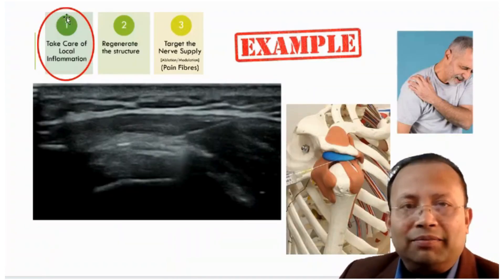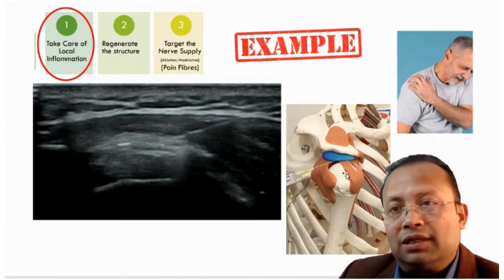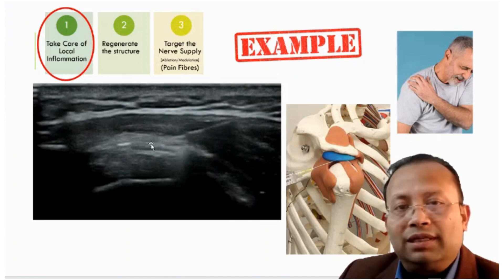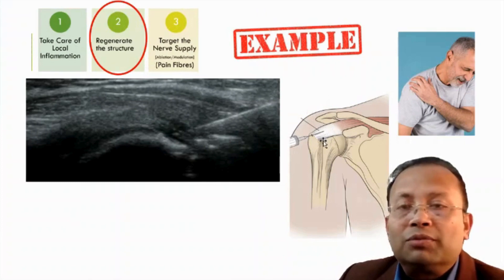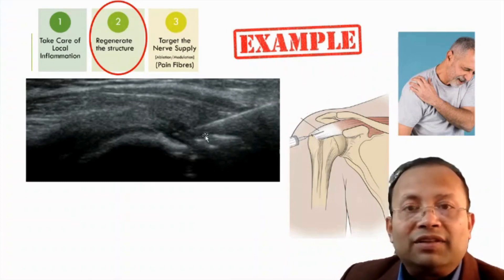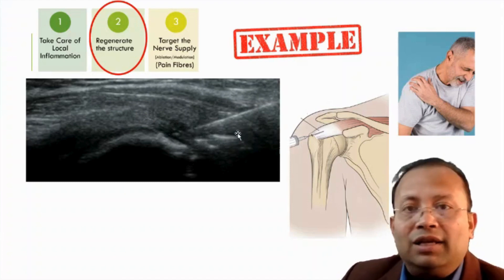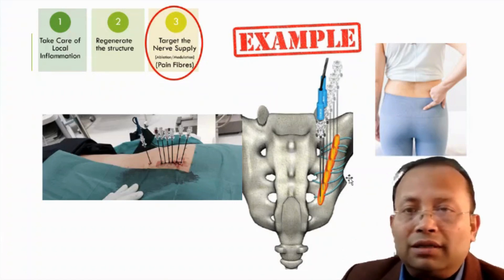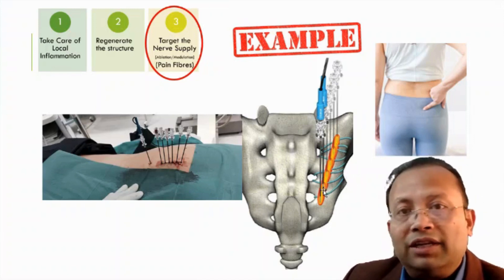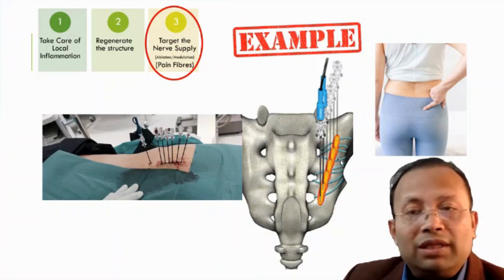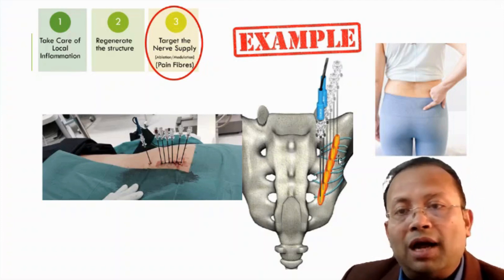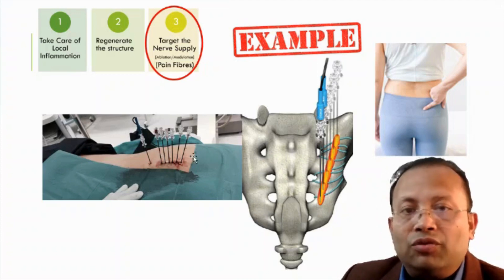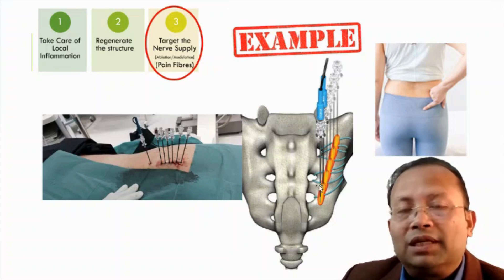For example, in a shoulder pain patient with subacromial bursitis, a needle is placed and medicine is given in the subacromial bursa to address local inflammation. In another shoulder pain patient with supraspinatus tendinosis, regenerative therapy is applied inside the tendon. In an SI joint patient where pain is due to degeneration and joint deformation, we perform neurolysis of the articular sensory nerves — specifically radiofrequency denervation — to provide complete pain relief.